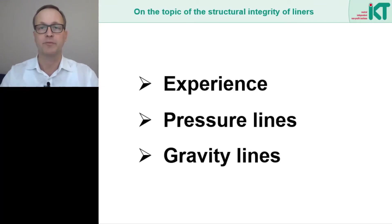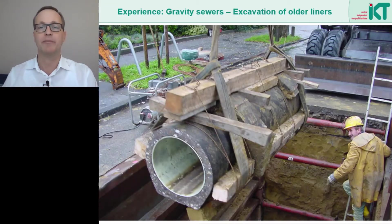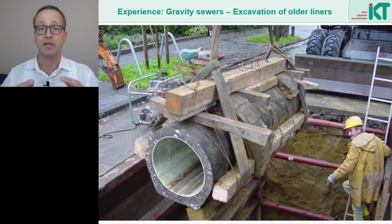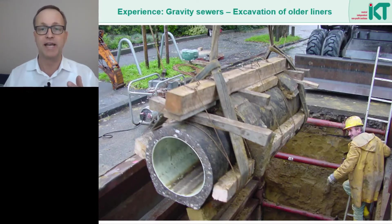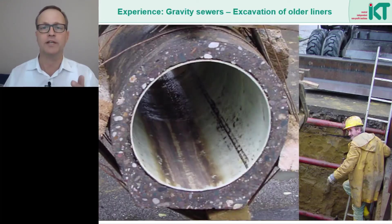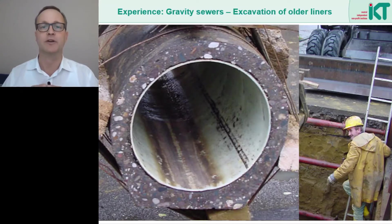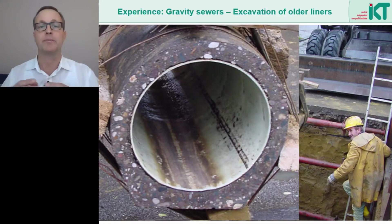Let's start with some impressions from practice. Here we see a piece of pipe from a sewer section that was excavated many years after liner rehabilitation, as part of one of our research projects. The old concrete pipe had been rehabilitated with a CIPP liner; the liner is still intact, stable, operationally safe and tight. The liner is evenly round and there is only a small annular gap between the liner and the old pipe. The size of this annular gap is of great importance for stability — the smaller the gap, the better the pipe is supported and the higher the external pressures it can withstand.